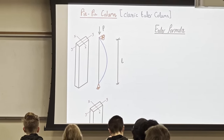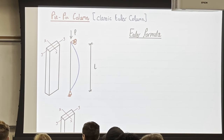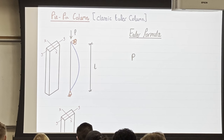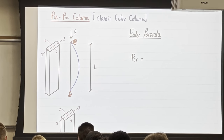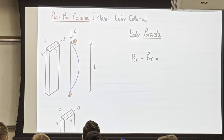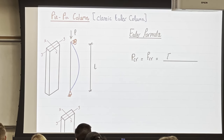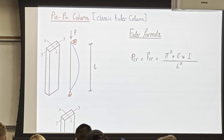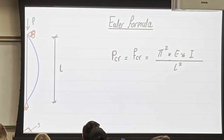Euler derived this equation using a differential equation. The derivation is in the reference. The critical load — PCR or FCR — is equal to π² × E × I divided by L². This tells you: if you increase the length, the buckling load decreases. A low buckling load is dangerous because the column buckles with a very small applied load.